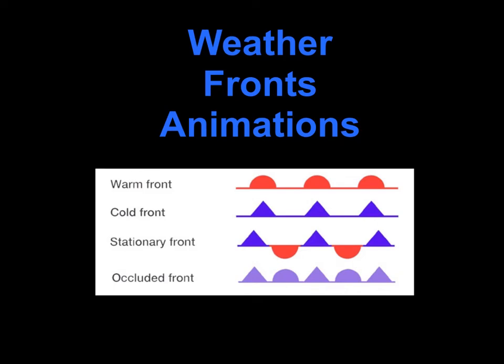In this video you are going to learn about weather fronts. There are four types: warm fronts, cold fronts, stationary fronts, and occluded fronts. You'll see the symbols shown on weather maps to represent each type. You'll also see four animations and will draw diagrams of each in your workbook.